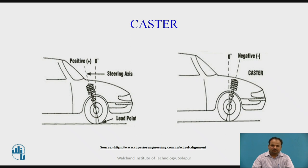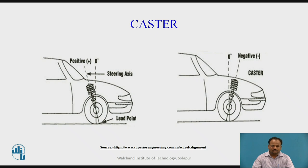Vehicles with power steering have more positive caster than those with manual steering. However, more positive caster requires more steering effort, which is not felt due to power steering. Any decrease in positive caster below the required level causes spring sagging.